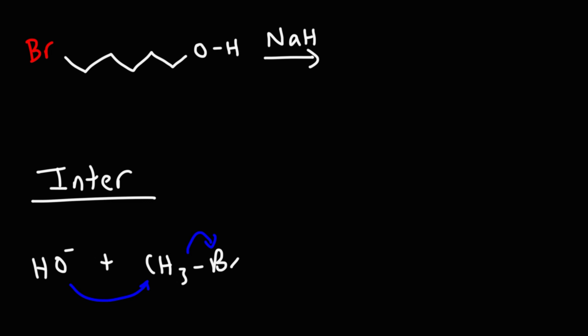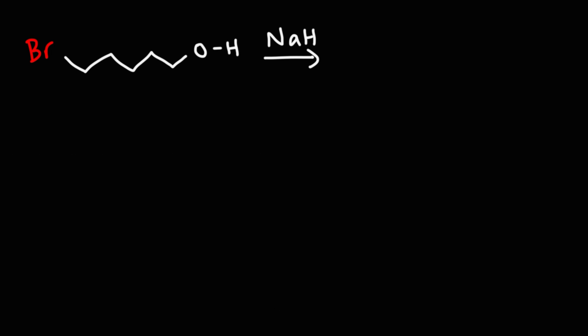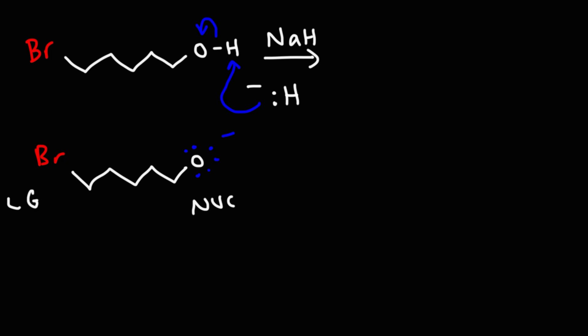With an intramolecular SN2 reaction, you have both the nucleophile and the leaving group in the same substrate. In the first step, hydride, which is a strong base, is going to remove the acidic proton in the OH group, so we're going to get an alkoxide ion. Notice that we have both the nucleophile and the leaving group all in the same molecule, so this is going to be an intramolecular reaction where the molecule reacts with itself. The nucleophile is going to attack this carbon, kicking out the leaving group.